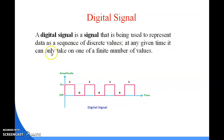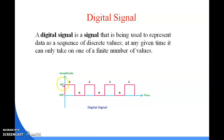In a digital signal, at any given time it can only take one of a finite number of values. The digital signal represents only particular finite values — one and zero, where one represents ON and zero represents OFF. This is why analyzing a digital signal is easier compared to an analog signal.